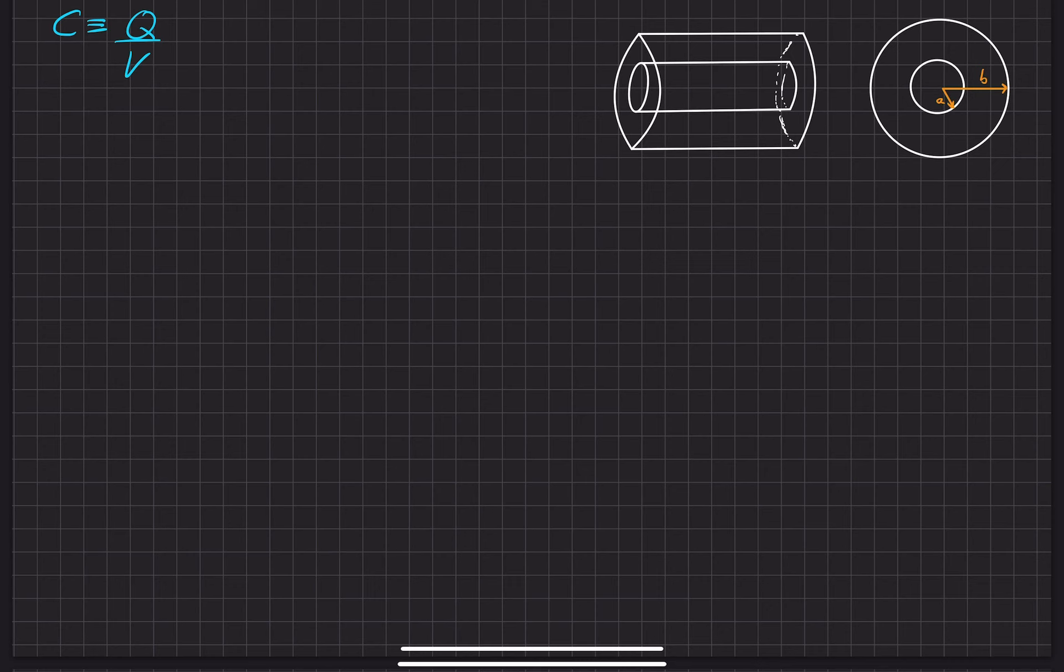So the first step is to do that Gaussian surface that I just drew before. I'll redraw Gauss's Law over here. It's the closed integral of that Gaussian surface.